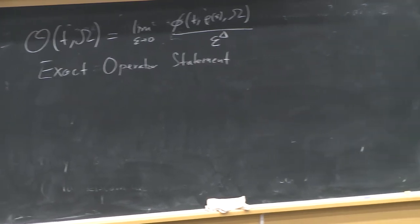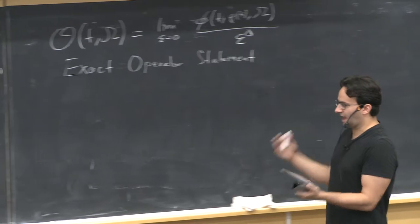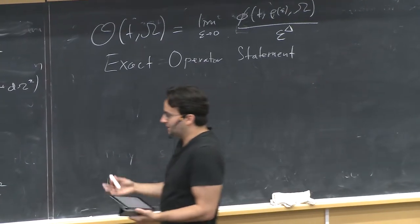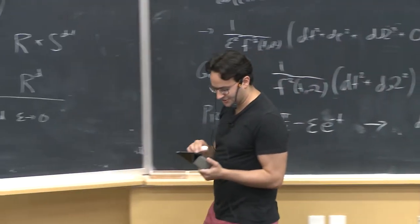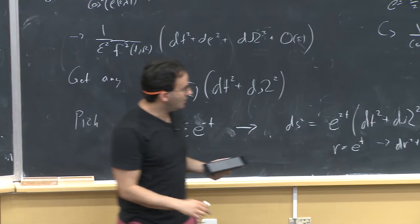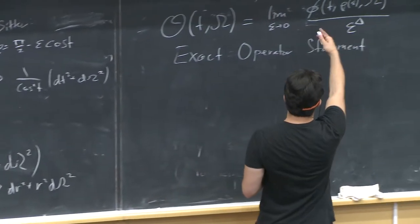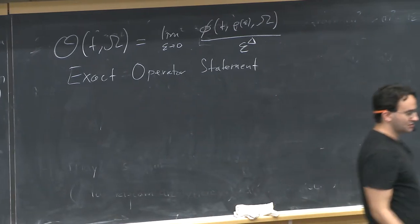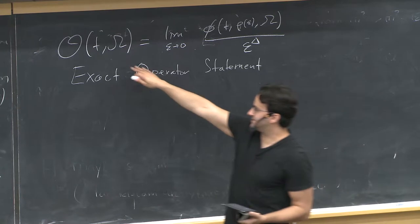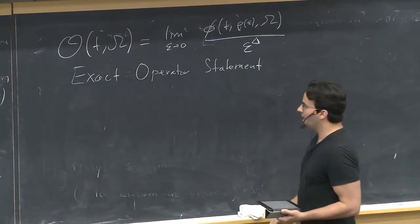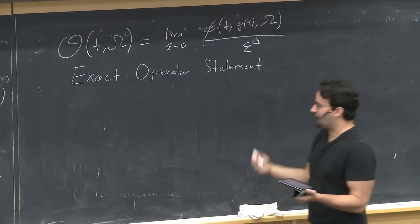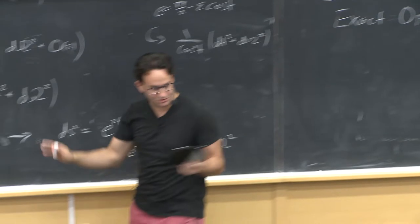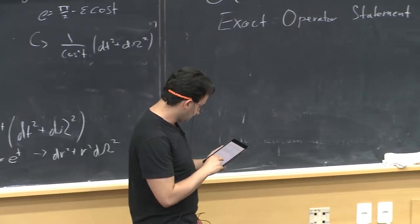This means that if we take our expansion of φ in terms of creation and annihilation operators a and a†, that gives us an equivalent expansion for O. All the information in φ is preserved in O and vice versa—we can use some inner product on modes in coordinates (t, ω) to extract any given a or a†, and use O to reconstruct φ. So at the level we're working, these are just equivalent things.